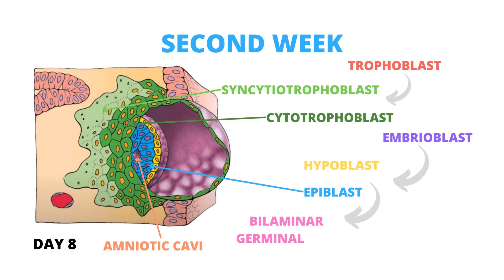On the eighth day of development, the blastocyst appears partially submerged in the maternal endometrium. The trophoblast is differentiated into two layers: the cytotrophoblast as the inner layer of mononuclear cells, and the syncytiotrophoblast as the outer multinucleated layer without visible cell boundaries. The cytotrophoblast in mitosis migrates outward to form the syncytiotrophoblast.